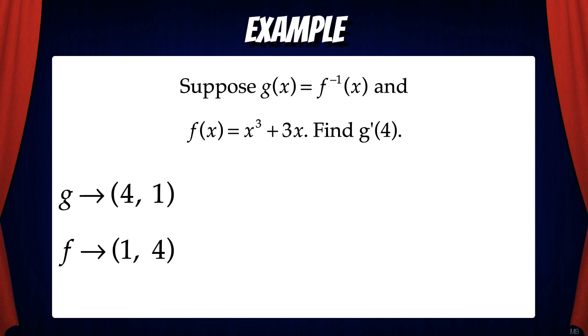Now we have the coordinates. The point 4, 1 is on the graph of g and the point 1, 4 is on the graph of f. Now we can use our derivative of inverse formula to find g prime of 4.